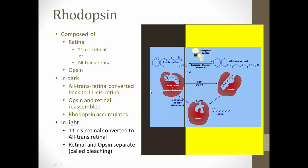The conversion of rhodopsin from 11-cis retinol to all-trans is a very fast reaction — hit it with a photon of light and it instantly breaks apart. But to reassemble rhodopsin back is a slow process. It breaks apart fast but rebuilds slowly.